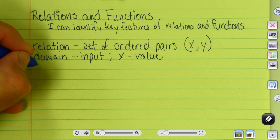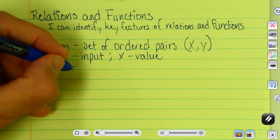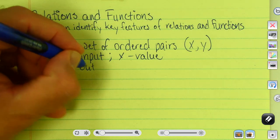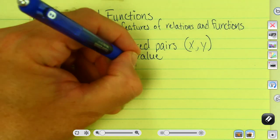And another part of a relation is what we call the range. We call that the output, or the Y value.